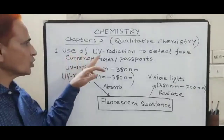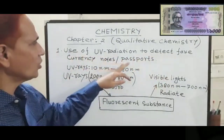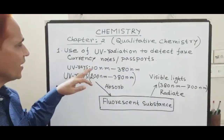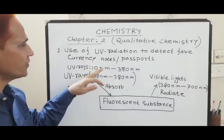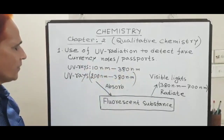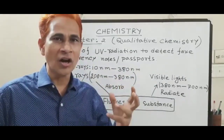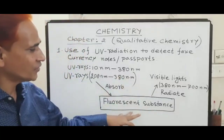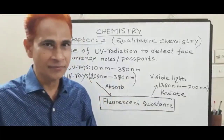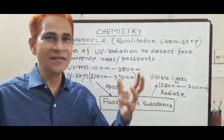At first, use of UV radiation to detect fake currency notes or passport. The wavelengths of UV rays lie in between 10nm to 380nm. In original currency notes or passport, a fluorescent substance is used as a security point, which is not visible to the naked eye.